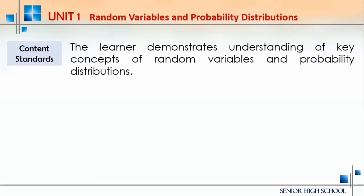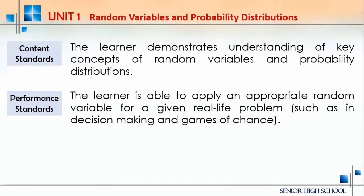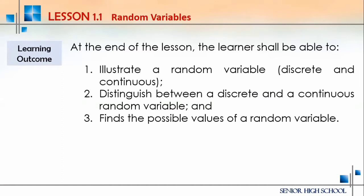The content standards for this unit: learners demonstrate and understand key concepts of random variables and probability distributions. The performance standard: the learner is able to apply an appropriate random variable for a given real-life problem such as in decision-making and games of chance. The learning outcomes: illustrate a random variable whether discrete or continuous, distinguish between the two, and find the possible values of a random variable.